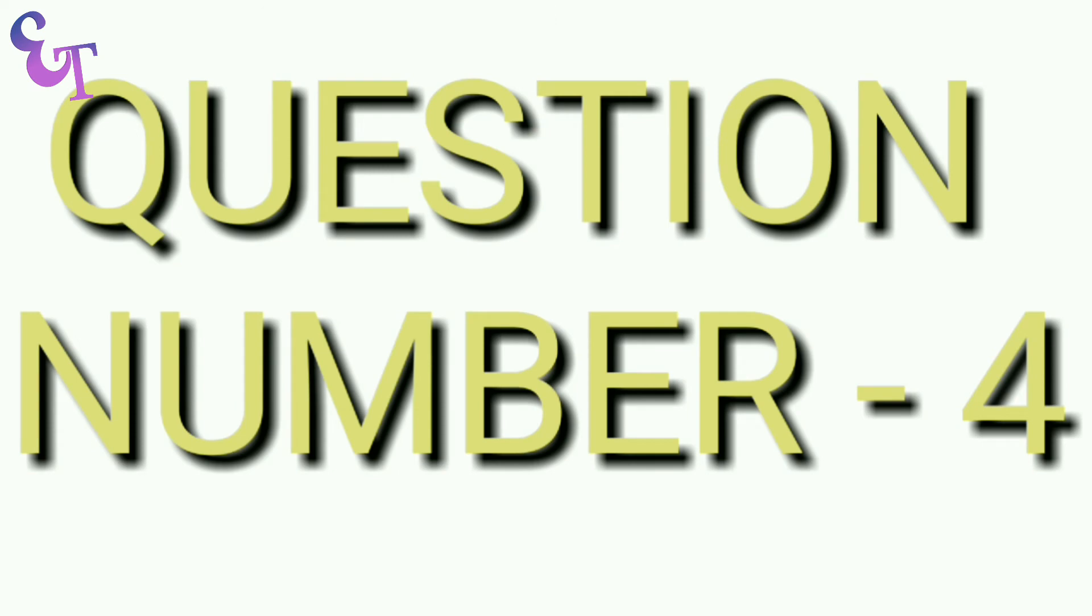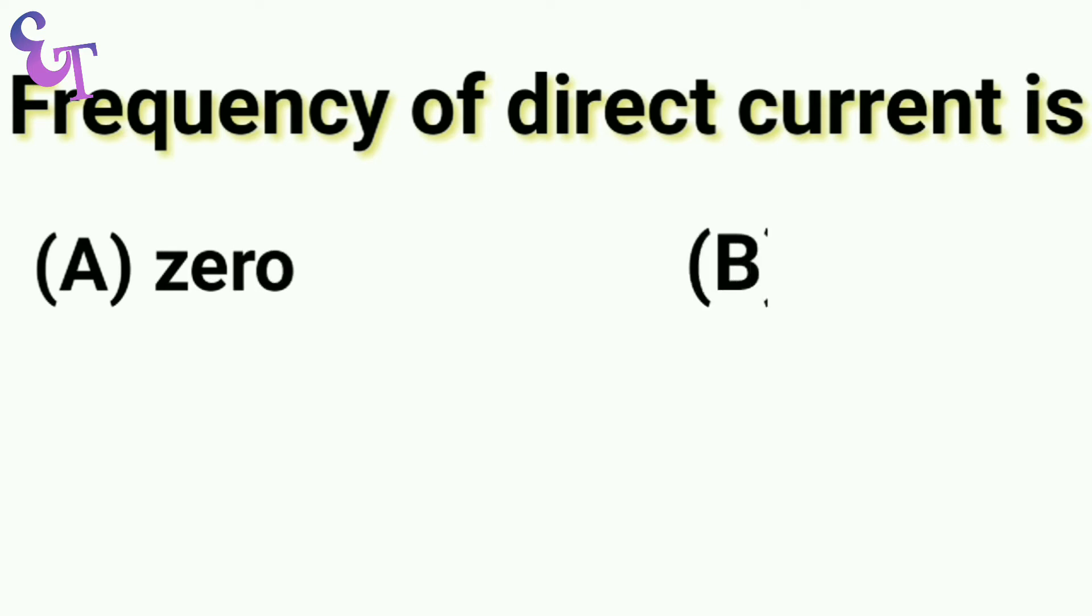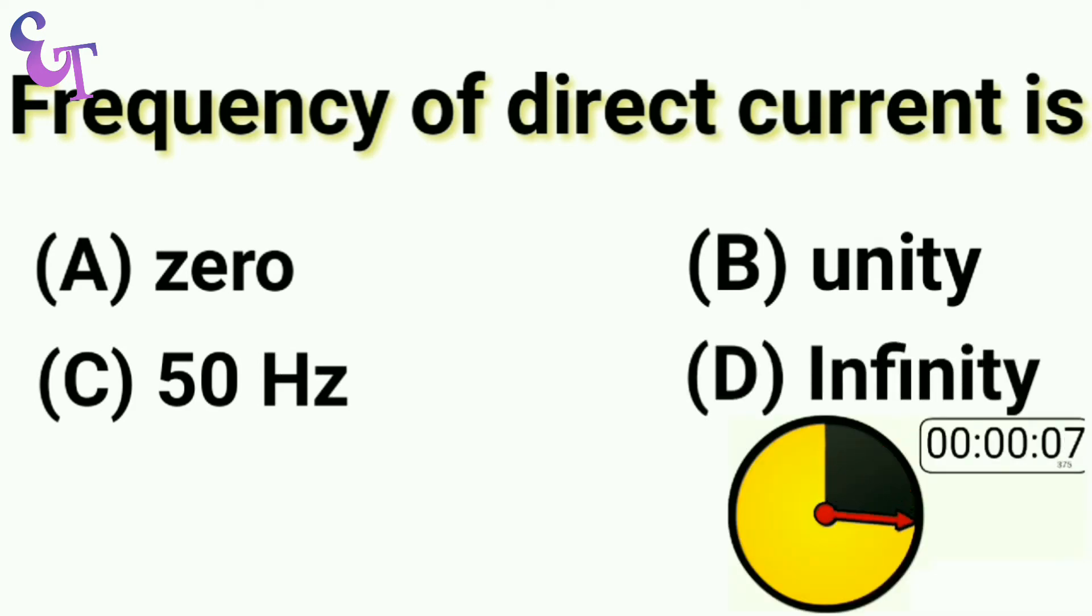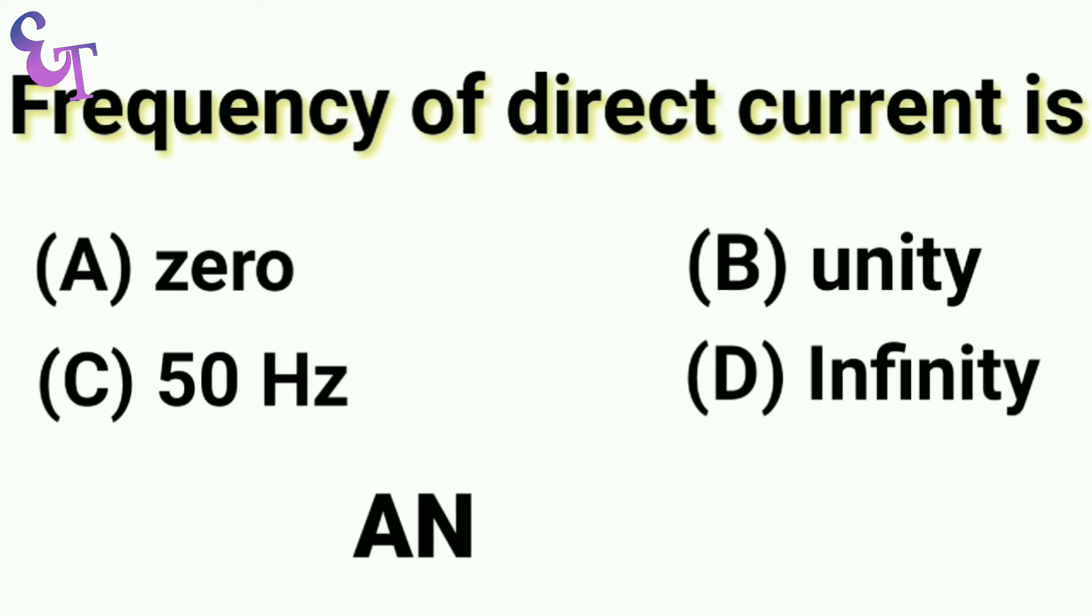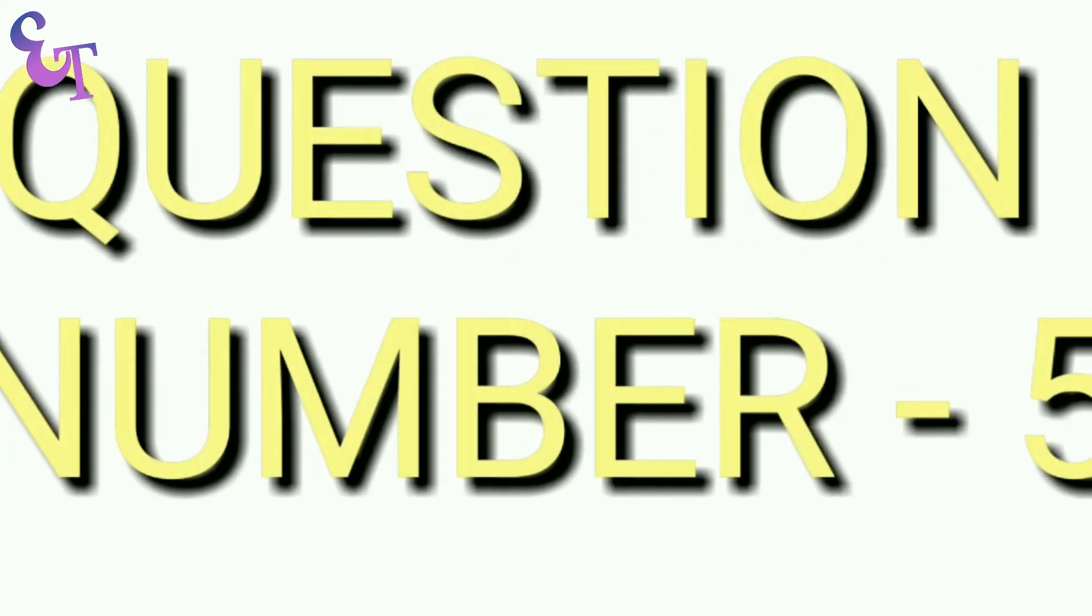Question number 4: Frequency of direct current is A. Zero, B. Unity, C. 50 Hz, D. Infinity. The right answer is A. Zero.